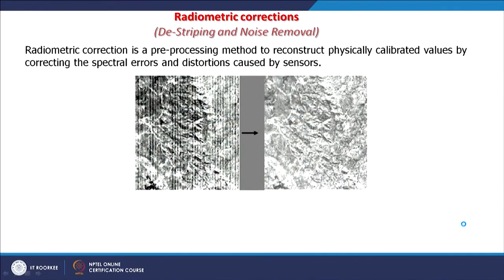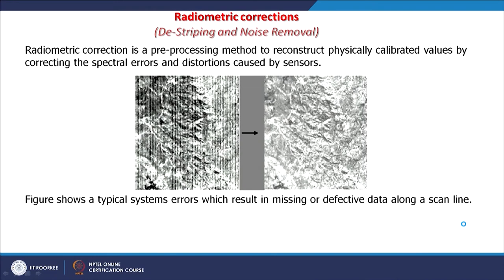De-stripping and noise removal we have seen demonstrated through the DIPS software. Radiometric corrections or de-stripping: the line we saw was horizontal in the software but here the stripes are in the vertical direction — the technique would be the same. The adjacent pixels' average value is taken and given to the dropped line, and you get a corrected image. However, if we will not have the stripping effect the image would be completely different from what we are seeing.